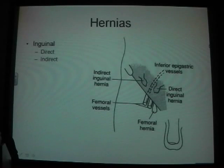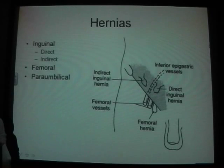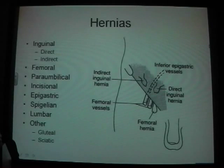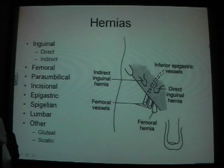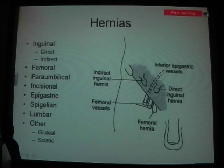Moving on to hernias — there are many types, including inguinal, which includes direct and indirect, femoral, incisional, epigastric, spigelian, lumbar, and rarer ones such as obturator and sciatic. Do you know how to differentiate anatomically between direct and indirect inguinal hernias?